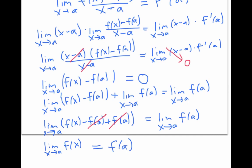And look at that. That's exactly what it means for a function to be continuous at x equals a, the limit as x goes to a of f of x equals f of a. So f is continuous at x equals a. And the proof is complete.